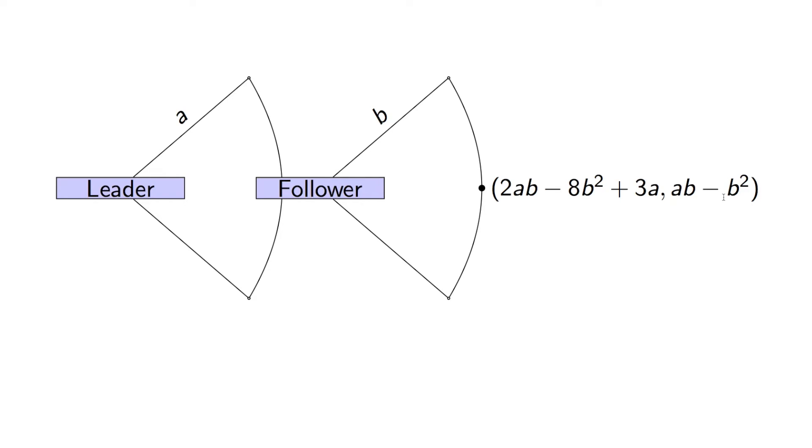Now, because of sequential rationality, we know that at this information set here, the follower will choose a B that optimizes this. Because of the form of this quadratic, we know that we can simply differentiate this, and we will get the optimal value that maximizes that inverted parabola.